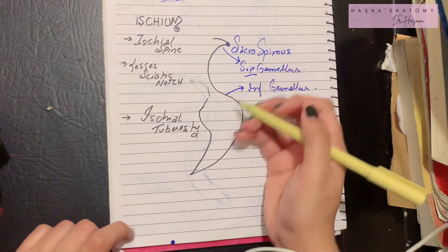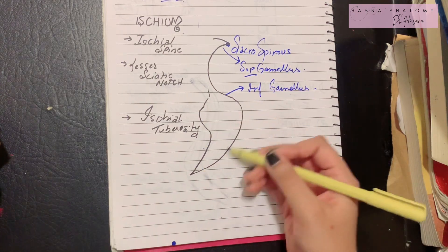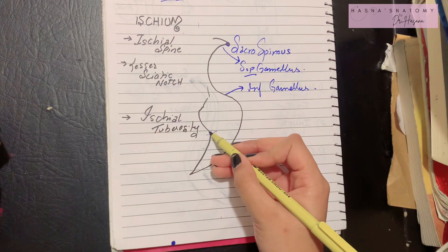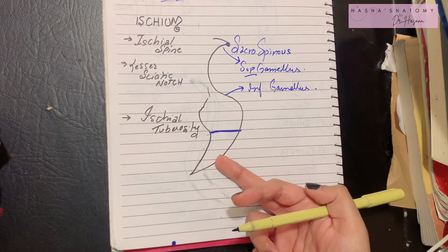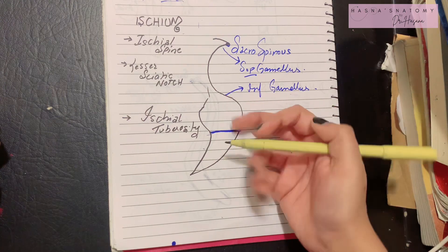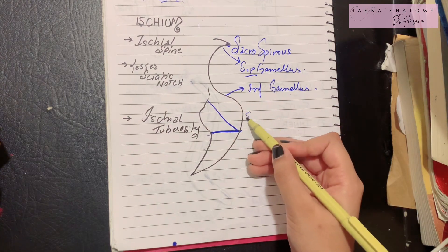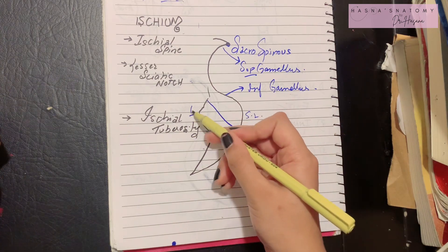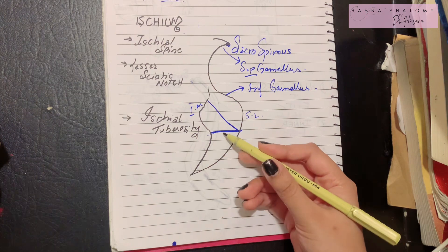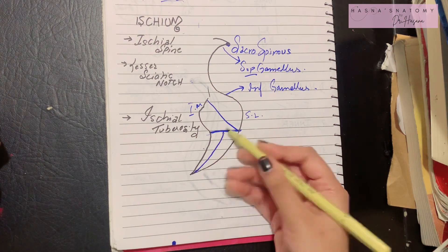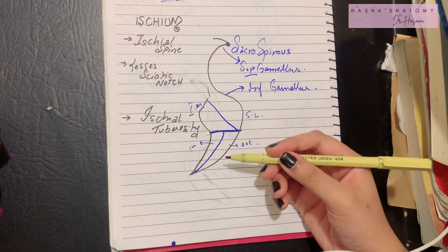The ischial tuberosity is divided by a transverse ridge into an upper and a lower part. The upper part is further divided via an oblique ridge into a superolateral and an inferomedial part. The lower part is divided by a longitudinal ridge into an inner part and an outer part. These divisions help in understanding the muscle attachments.